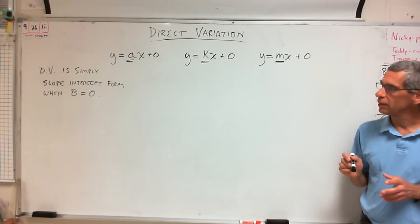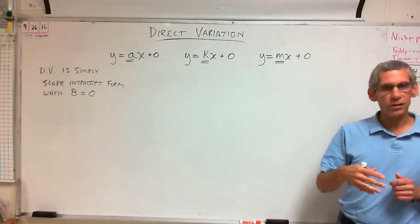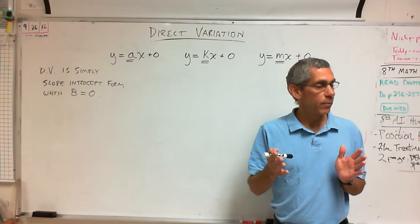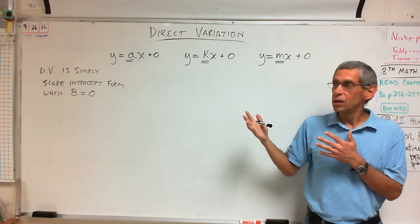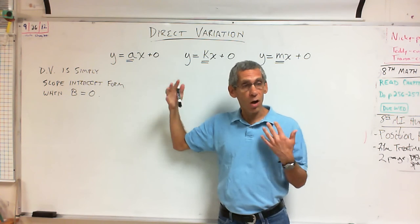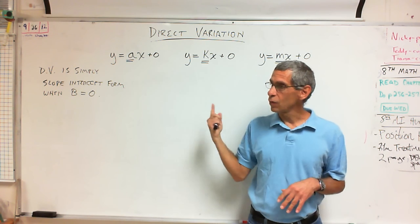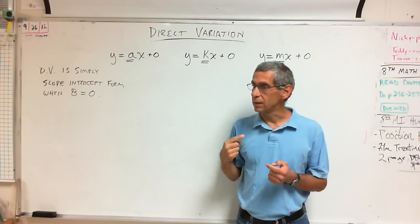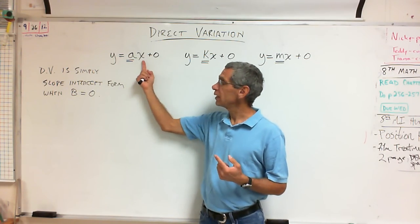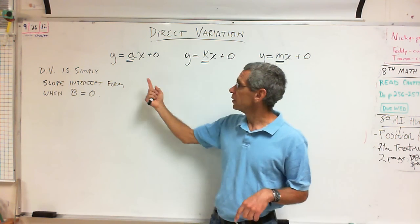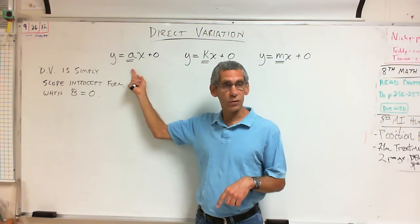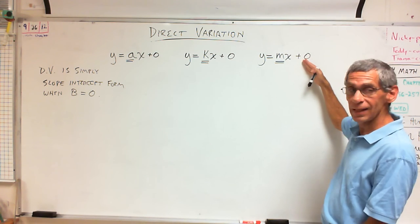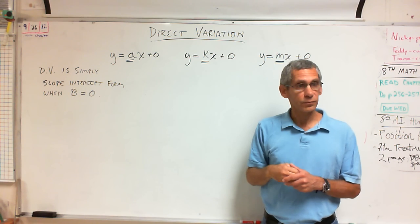Direct variation is simply slope-intercept form when B equals zero. Remember, sometimes people call slope-intercept form the 'Y equals form.' No matter how your equation looks, you solve for Y so it says Y equals, and you will always be in slope-intercept form. To tell whether Y varies directly with X, all you have to do is write it so it says Y equals MX — without anything after it — and it is direct variation.